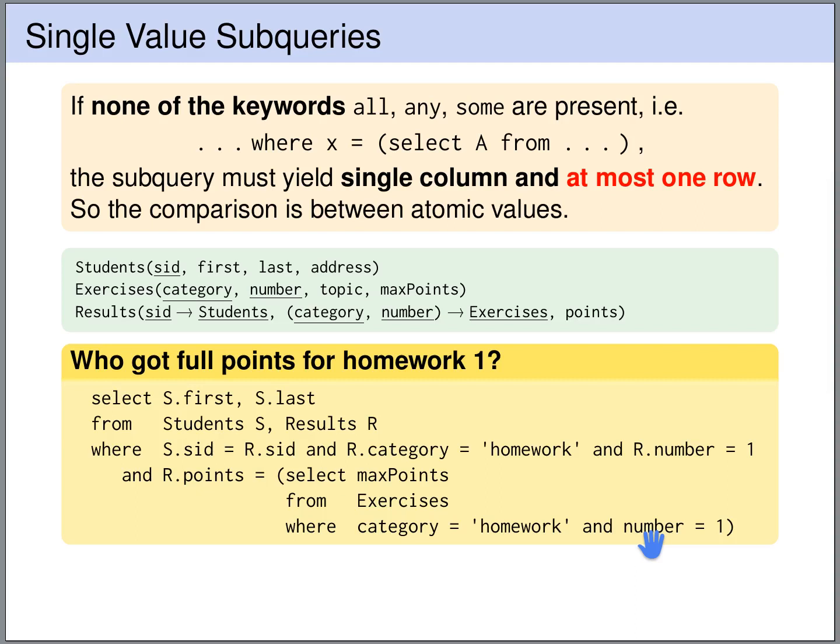So why does the subquery deliver a single value? And if you write such single value comparisons, you should really think about why the subquery is guaranteed to deliver a single value. Can there not be multiple rows? Because if the subquery returns multiple rows, then the database management system will bring a runtime error.